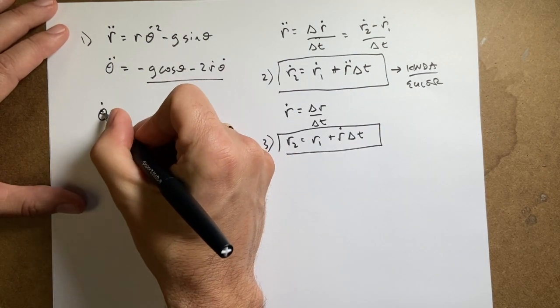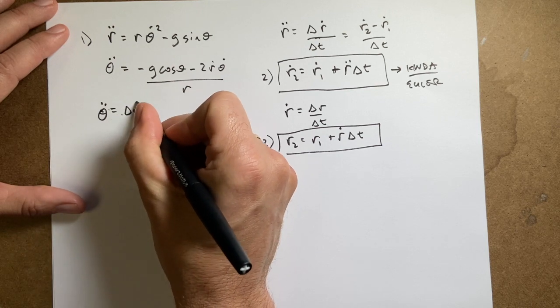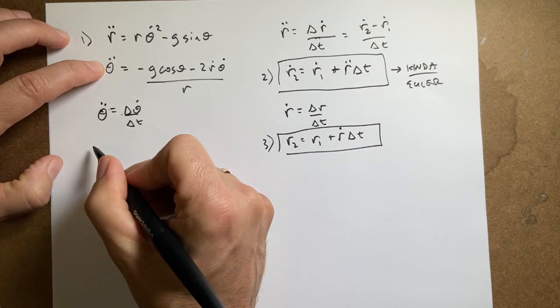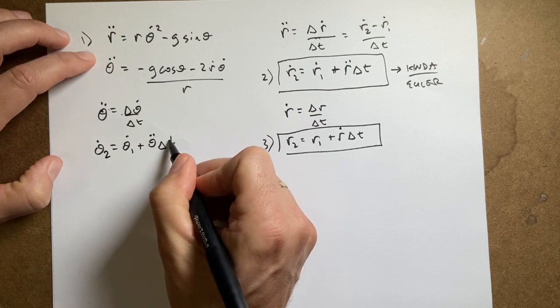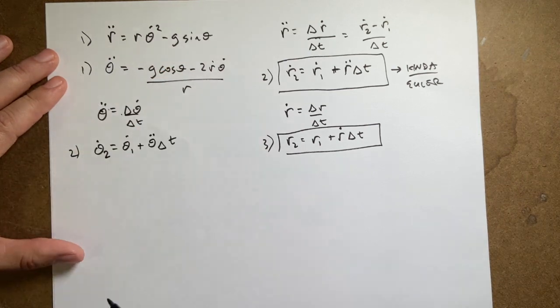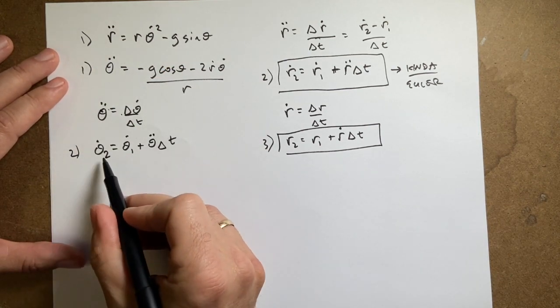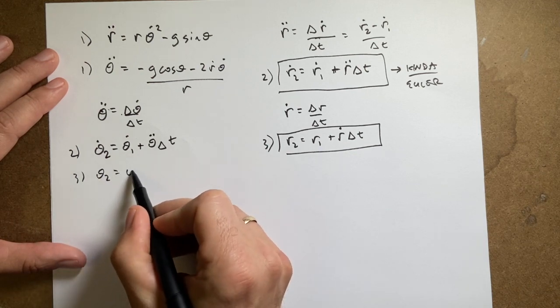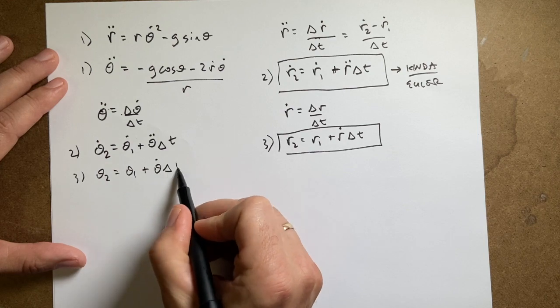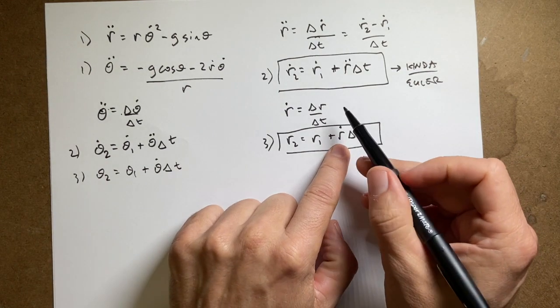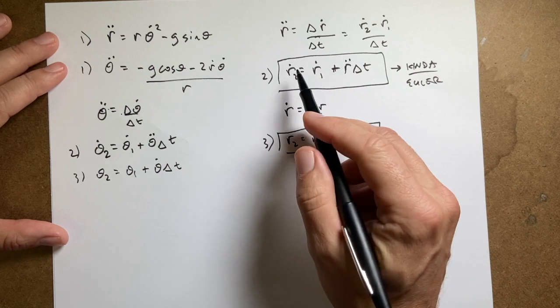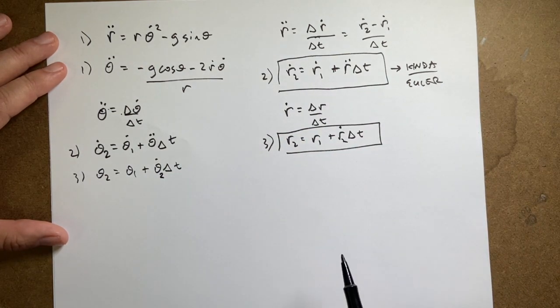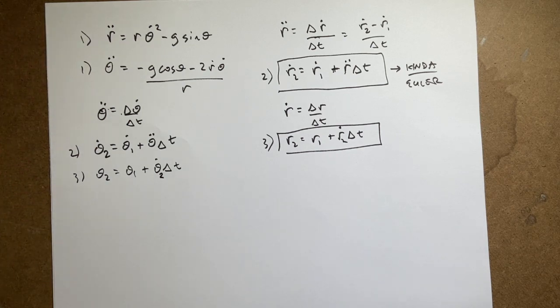And then I need to do the same thing for theta. theta double dot, same idea applies, is delta theta dot over delta t. So I can calculate theta double dot, and then I can calculate theta two dot equals theta one dot plus theta double dot delta t. And then I can do the next thing too. Calculate theta two equals theta one plus theta dot delta t. Now the question is right here, which r dot do you use? I just calculated r2. Technically it should be the average, but who cares? If delta t is small I'm actually just going to calculate r2 dot and just use that right here. And same thing right there. And then I need to update time. If I use a short time interval I just jump back to the beginning and I do it again and again.